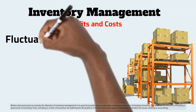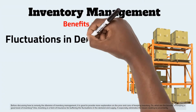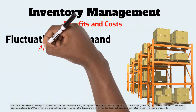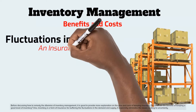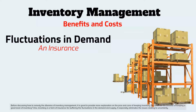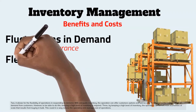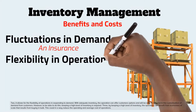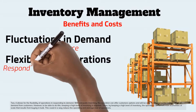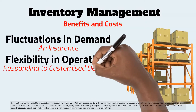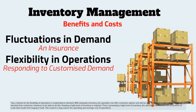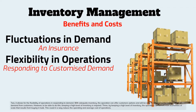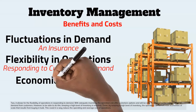First, inventory is a form of insurance for buffering the fluctuations in demand and supply — it especially eliminates issues relating to uncertainty. Second, it allows for the flexibility of operations in responding to demand. With adequate inventory, the operation can offer customers options and will be able to respond to the customization of demand from customers. However, to be able to do this, keeping a high level of inventory is required.